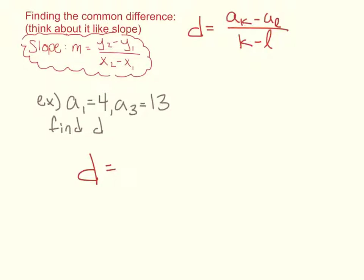Yeah, we're given a sub 1 and a sub 3. So if I think about it in the terms of slope, that would be like a₃ minus a₁ over 3 minus 1.